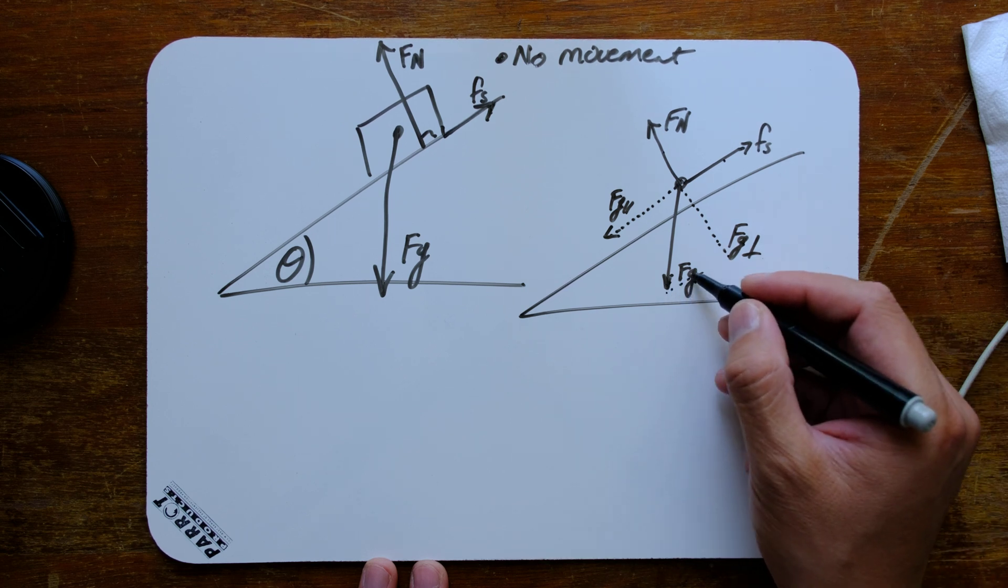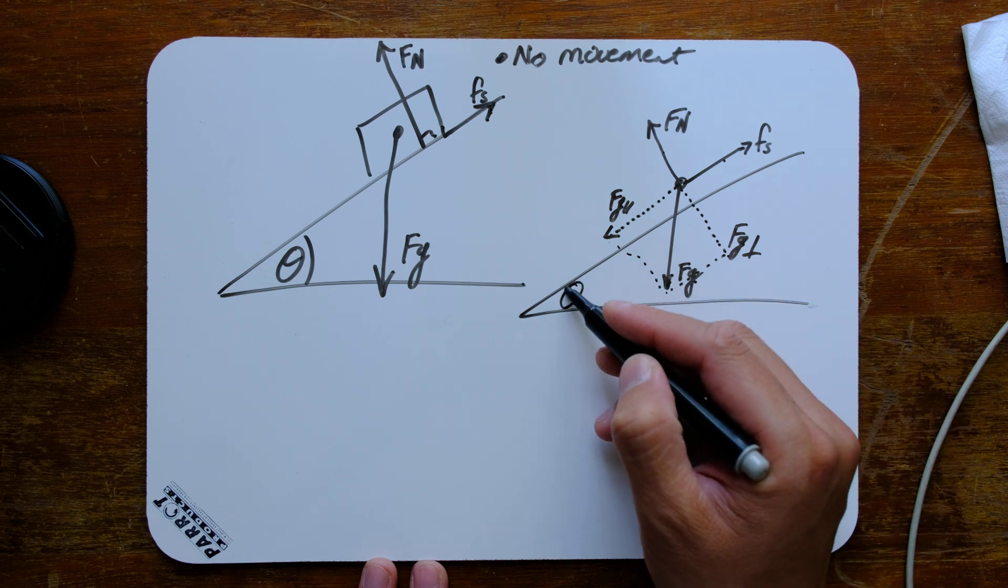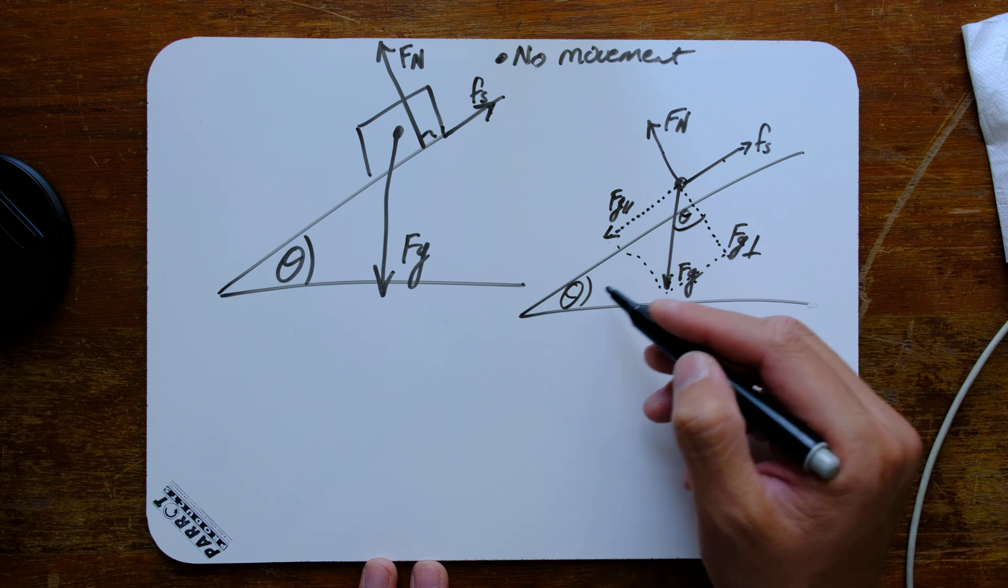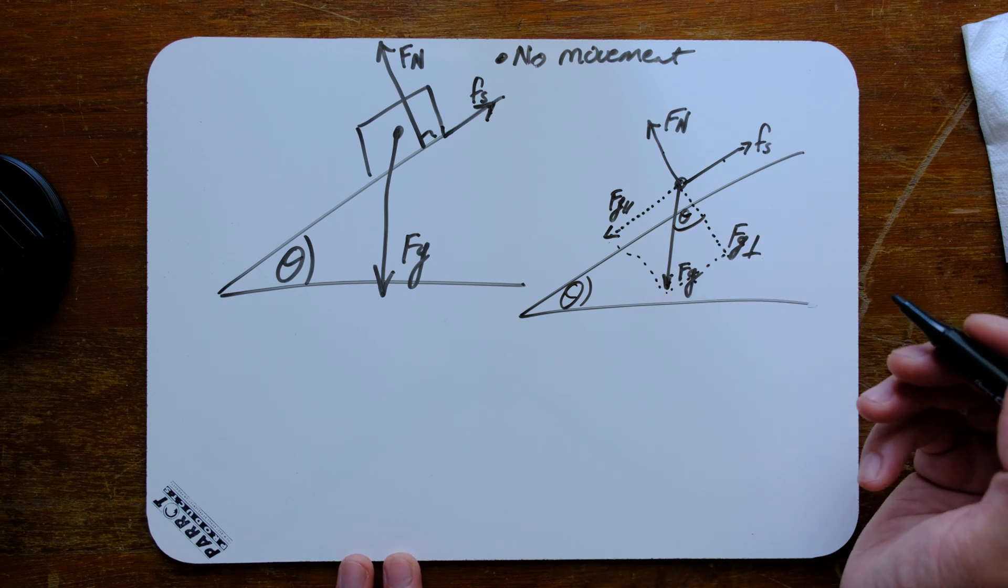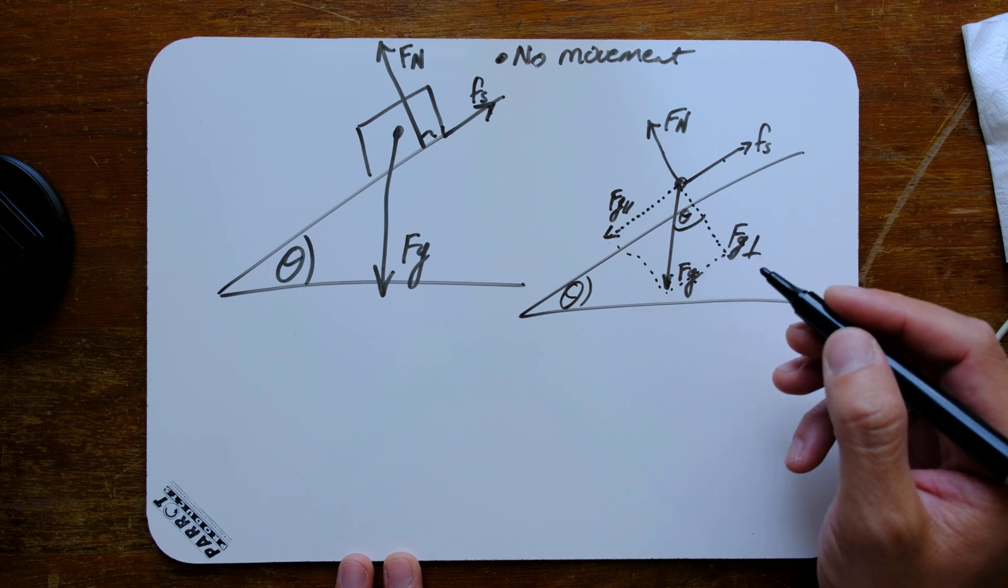All right, now by completing this little quadrilateral, now we can say that this angle in the corner is equal to theta. I'm not going to go into the maths to prove that, but you can always ask your teacher, if it comes down to it.